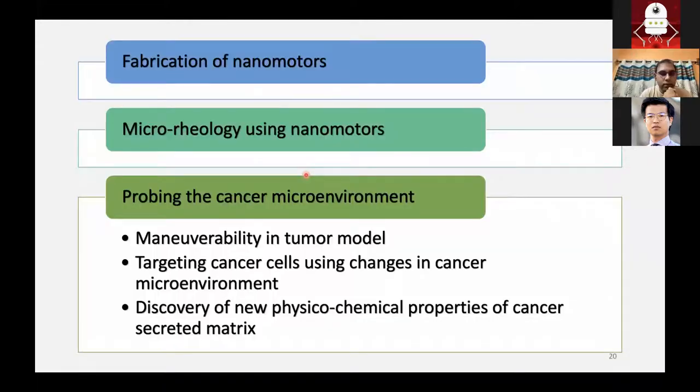It's mostly to do with maneuverability in a tumor model. The question was, can we move through a tumor model? Can we target cancer cells and see if the cancer microenvironment is somehow different? Can we find something new, like some physicochemical changes that is happening when the cancer secretes its own matrix?